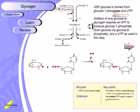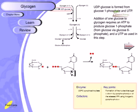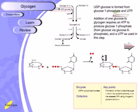UDP-glucose is formed from glucose-1-phosphate and UTP. Adding one glucose to glycogen requires an ATP to produce glucose-1-phosphate from glucose via glucose-6-phosphate, and UTP is used as well. The two phosphate groups are released and UDP is attached to glucose to produce UDP-glucose. This UDP-glucose formation is mediated by the enzyme UDP-glucose pyrophosphorylase, and the reaction is driven thermodynamically by hydrolysis of the released pyrophosphate.